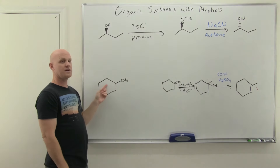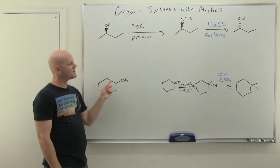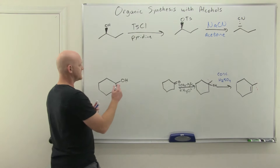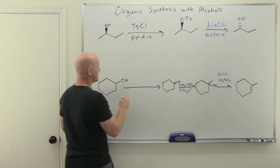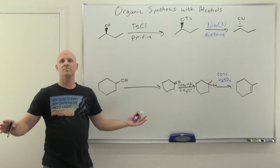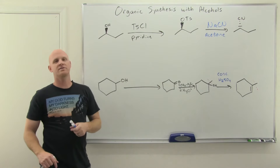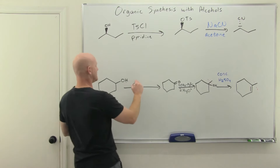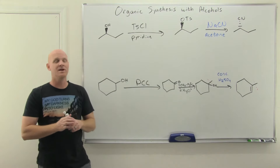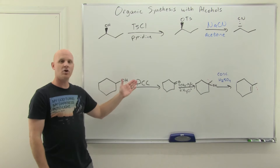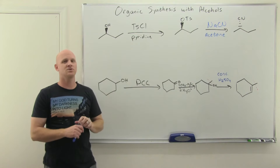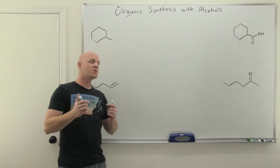To make the ketone we need, we start from a secondary alcohol. We learned that oxidation of a secondary alcohol can use either chromic acid or PCC. It's much easier to write PCC, so that's what we'll use — though sodium dichromate and H2SO4 would also work.